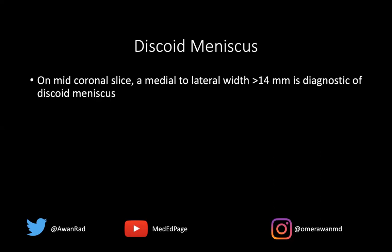The way we diagnose this is really on MRI. On a mid-coronal slice, when you get to the middle of the series, if the medial to lateral width is equal to or more than 14 millimeters, that's usually diagnostic of a discoid meniscus. Some people use 12 millimeters, some use up to 16 millimeters depending on the textbook, but a safe measurement is about 14 millimeters.